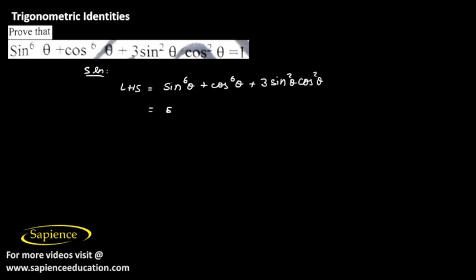Now this can be written as sin square theta whole cube and similarly cos to the power 6 can also be written as cos square theta whole cube plus 3 sin square theta cos square theta into sin square theta plus cos square theta.